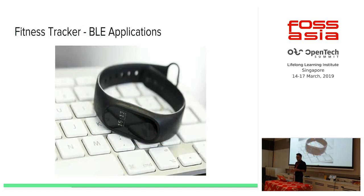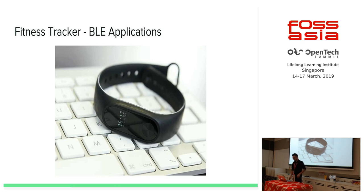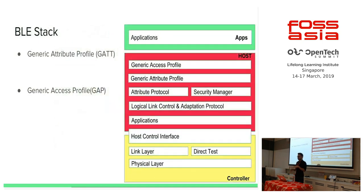Let's go back to the fitness tracker I mentioned. I decided to focus on it because I saw many people using one and thought — why not hack it? So I got myself a fitness tracker, not to stay fit, but to hack it. Before we move on, we need to understand a few terminologies in the BLE stack. If you look carefully, there are two important things: the Generic Attribute Profile (GATT) and the Generic Access Profile (GAP). These are terms I'm going to use very often.